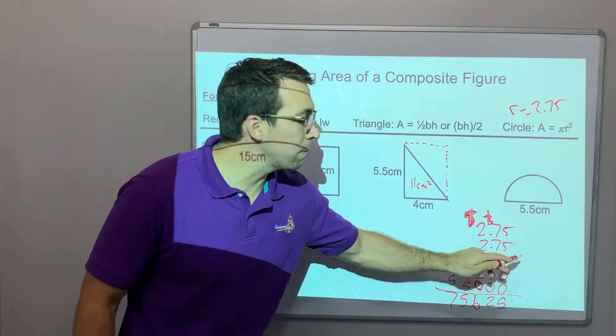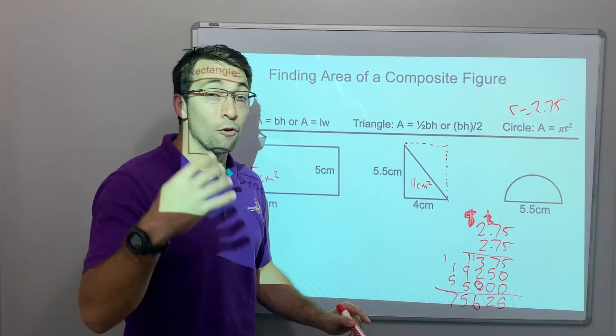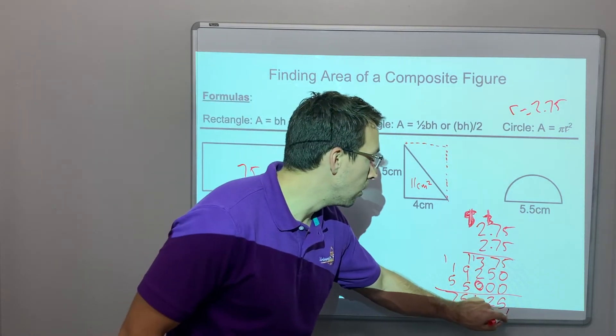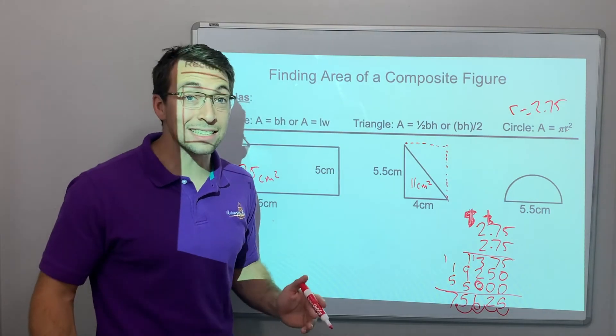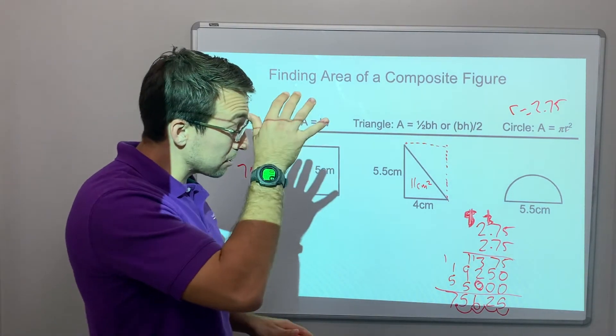Now look, we have 1, 2, 3, 4 decimals! 4 decimals in the problem, so 1, 2, 3, 4. 7.56! That's our answer, 7.56.